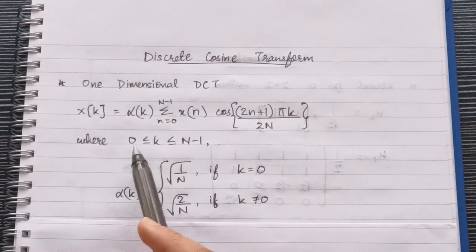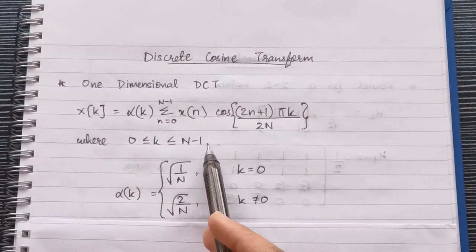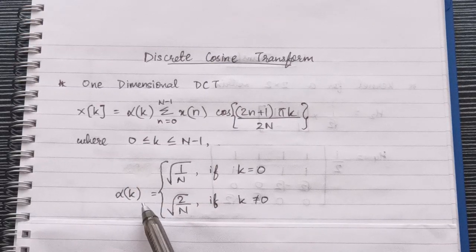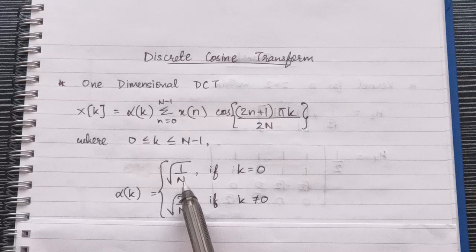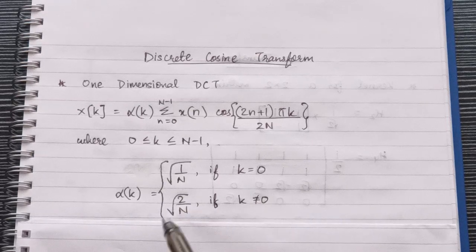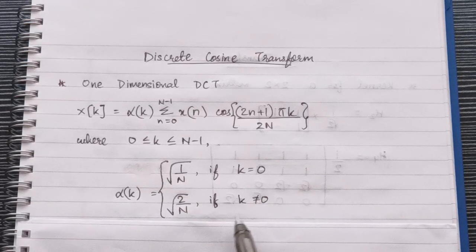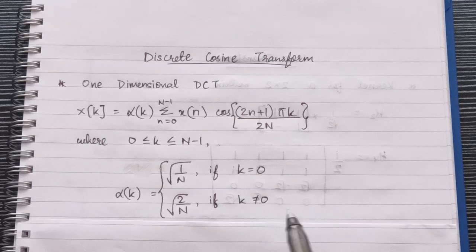α(k) = √(1/N) if k=0, and √(2/N) if k≠0. Now let's look at the questions.